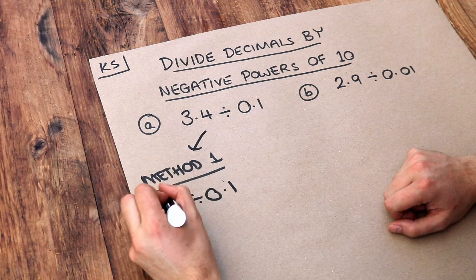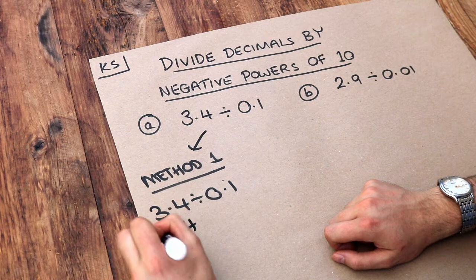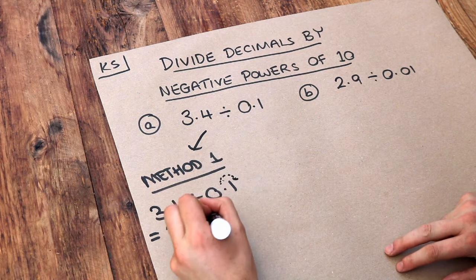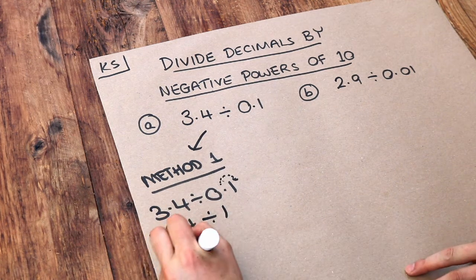So if we do that, if I multiply this by 10, then this becomes 34. If I multiply this by 10, the decimal point moves right 1 and we just get 1. So we've got 34 divided by 1 and that's just 34.